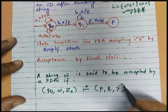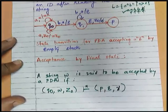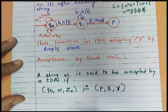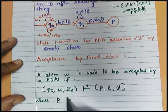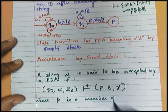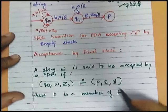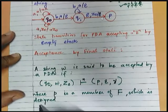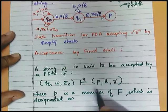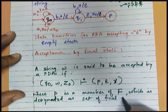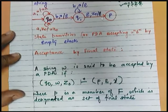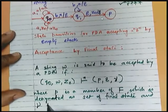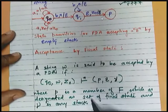(q0, w, z0) on multiple transitions or multiple steps reaches to an ID denoted by (P, ε, γ). We are accepting the string with the final state when your P is a member of F, final state.